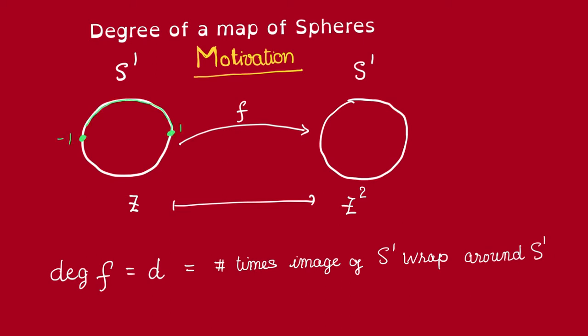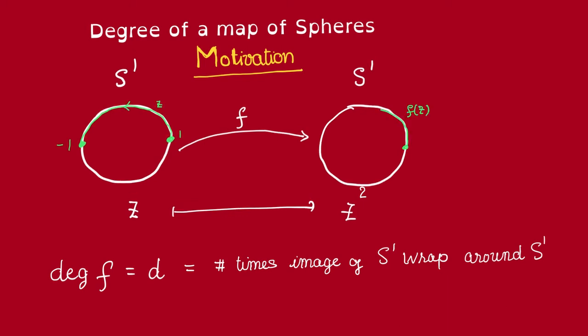In that case, as z go from 1 to minus 1 in the domain, f of z will have already go around this whole circle once. So, as z completes its journey here around this domain, f of z would have wound around the circle twice.